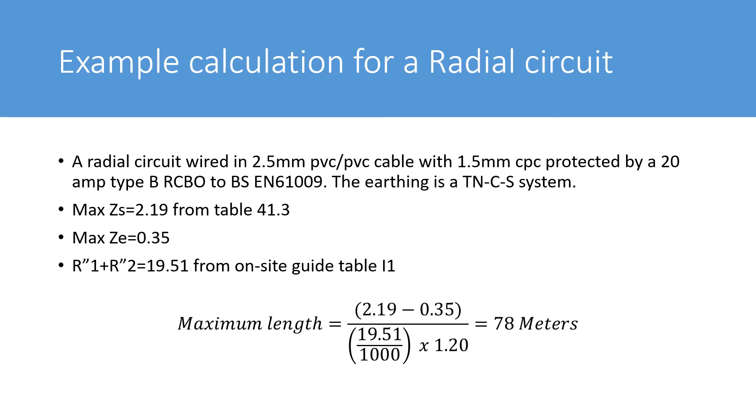So the maximum ZS would be 2.19 and that's from table 41.3. The maximum ZE is going to be 0.35 for a PME system. And the tabulated values for R1-R2 is 19.51 milli-ohms per meter. And that's from the on-site guide table I1.